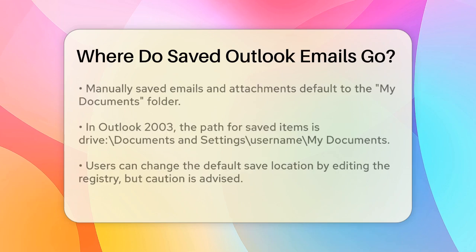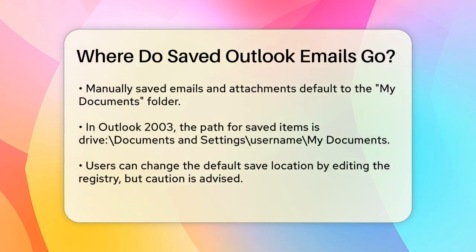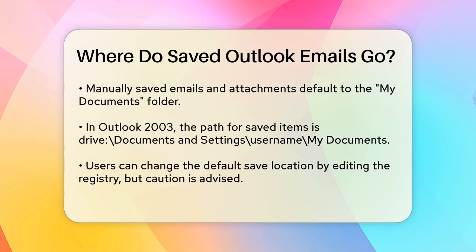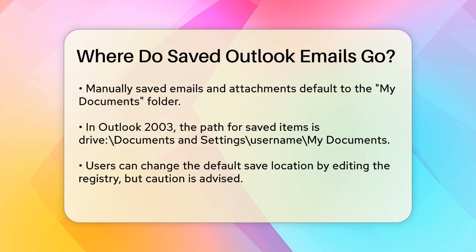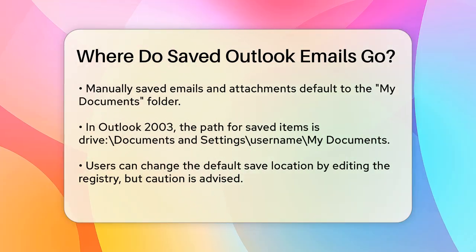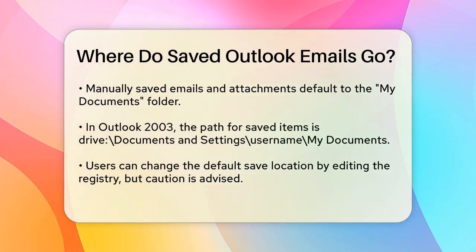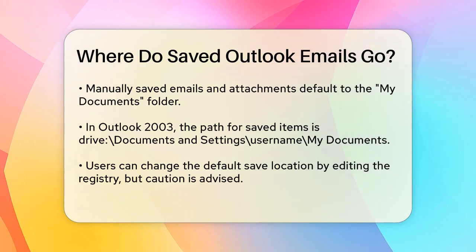Now, what about emails and attachments that you save manually? By default, when you use the Save As command in Outlook, these items are saved in your My Documents folder. For example, in Outlook 2003, this would be at the path: Drive\Documents and Settings\Username\My Documents, where Drive is the drive where Windows is installed and Username is your username.